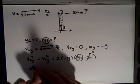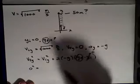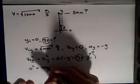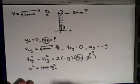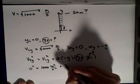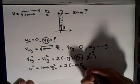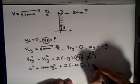So y final velocity squared is zero squared equals the initial y velocity squared is the square of this will be 1,000 meters squared per second squared plus 2 times g is minus, is 10 meters per second squared times y final.